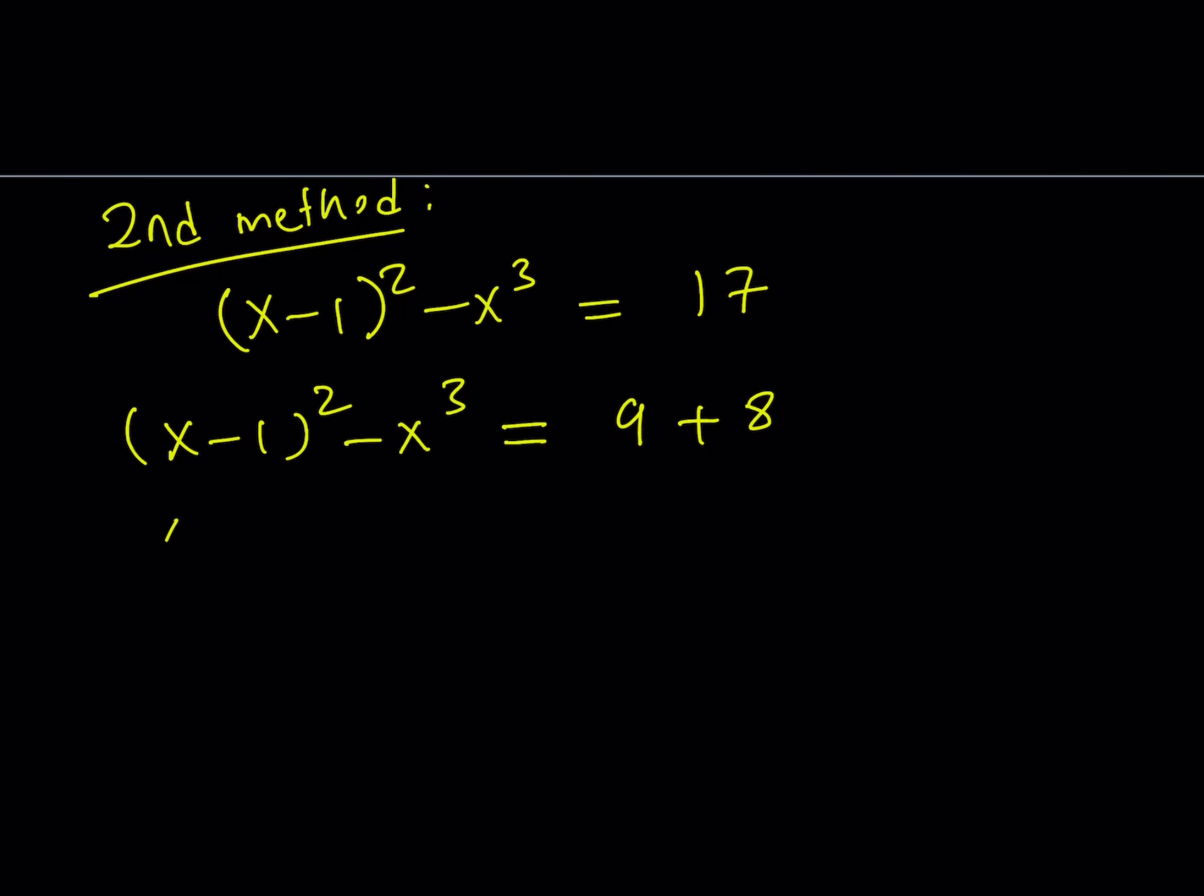Let's go ahead and put the 9 next to x minus 1 squared and bring the x cubed over here so that the two cubes can be added together. What does this look like? Well, this looks like a difference of two squares and sum of two cubes.